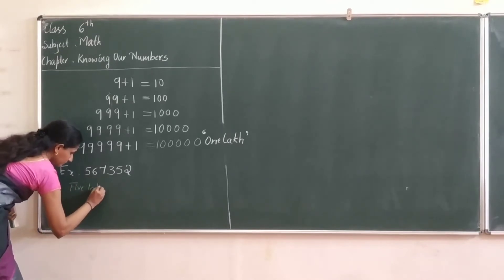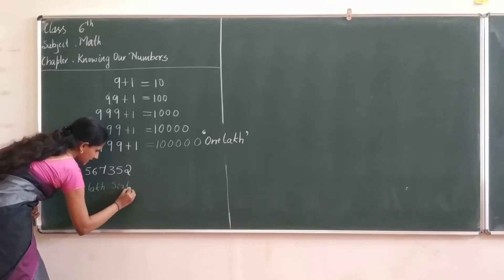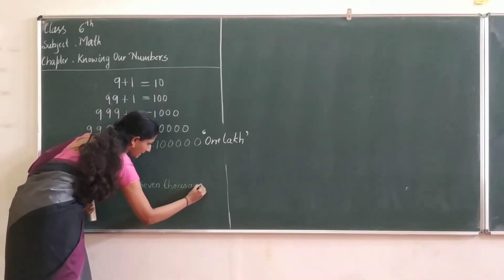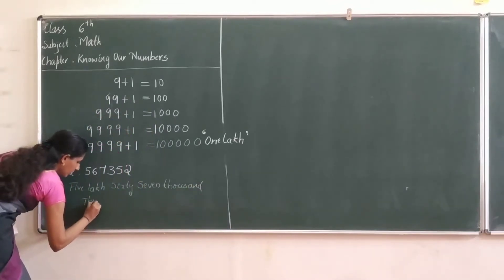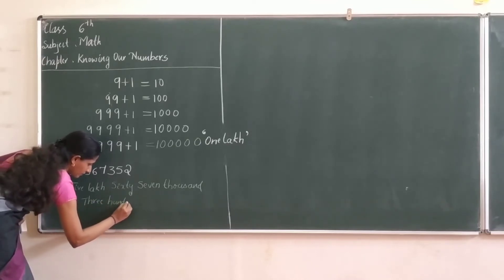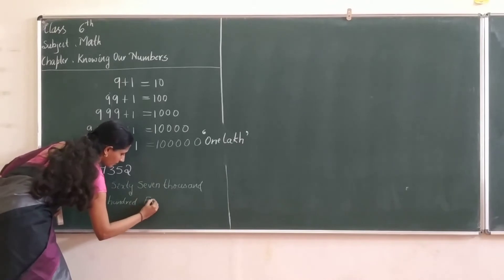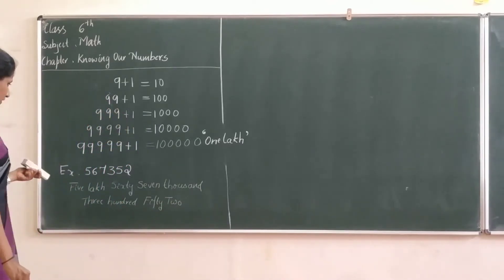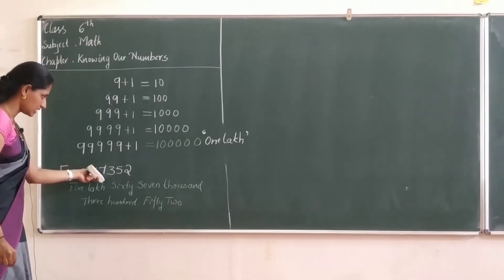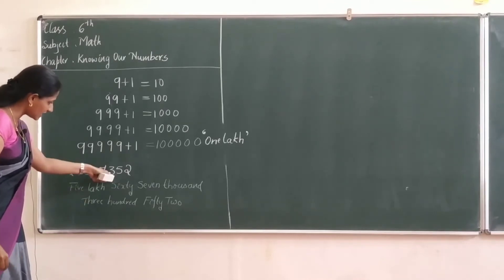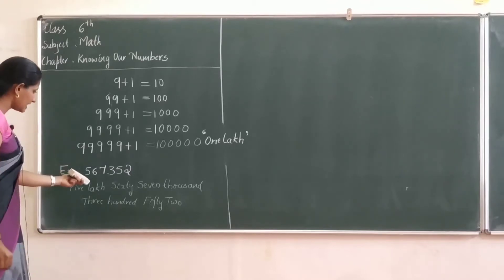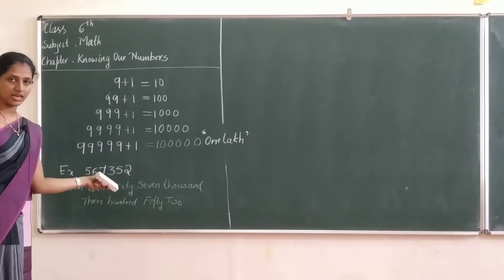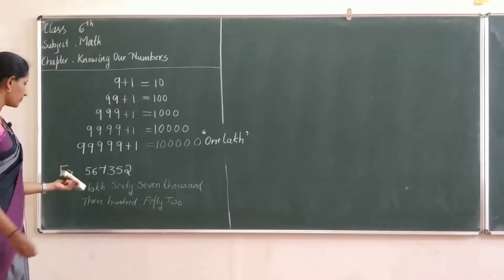Five lakh and sixty-seven thousand, three hundred fifty-two. Is this right? Is this correct? Five lakh, sixty-seven thousand, three hundred fifty-two. Correct. Can you write it in expansion form? It is easy now because we already wrote it as a number, so we can easily write the expansion form of this number.